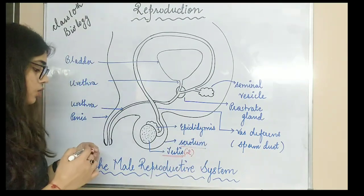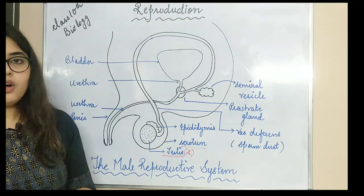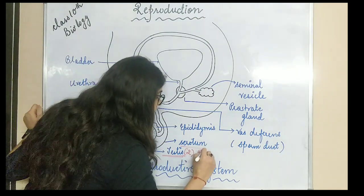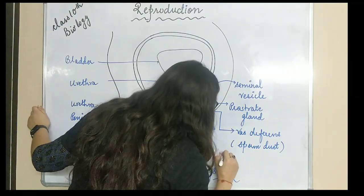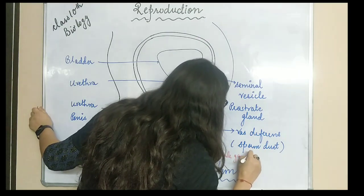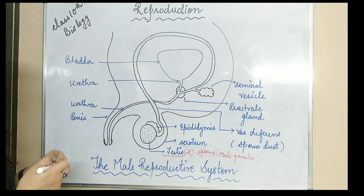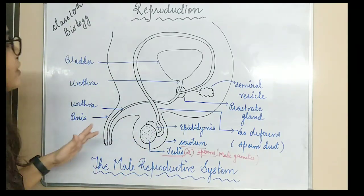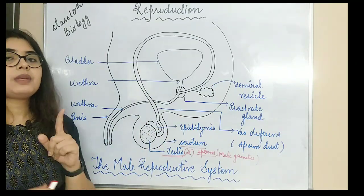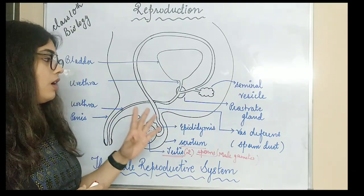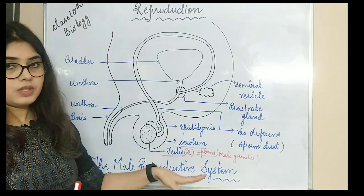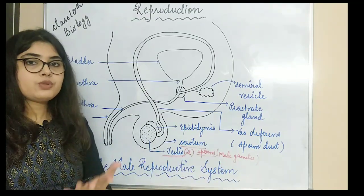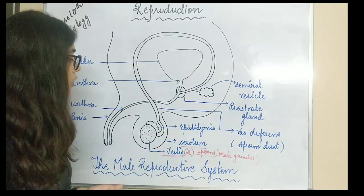You should ask: why are the testes present outside the body of the human, and not inside? The reason is that the testes produce sperms, which are the male gametes. The testes have mainly two functions, but first we are talking about the formation of sperms — the male gametes, also called reproductive cells or sex cells.